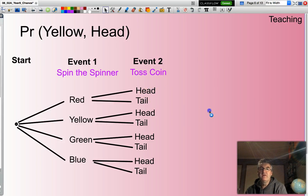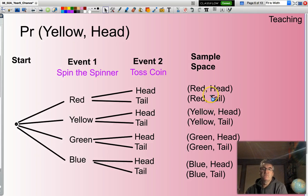And what I'll end up with is what's referred to as a sample space. It's a list of all the outcomes. So you can see here, red followed by head, red followed by tail, all the way through to blue followed by tail.